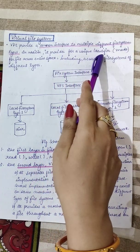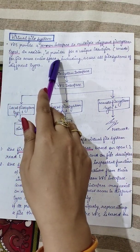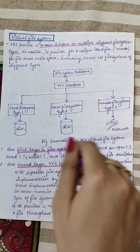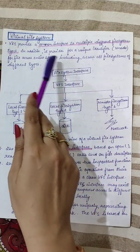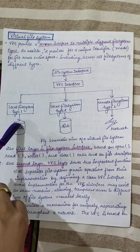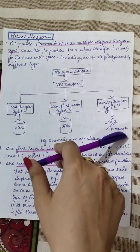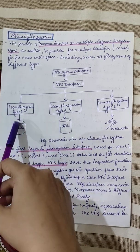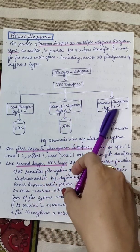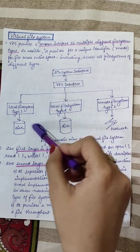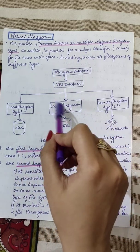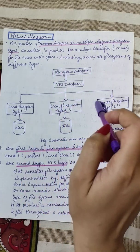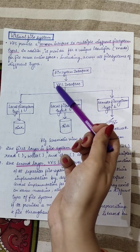In addition, VFS provides a unique identifier called a vnode for a file across the entire space, including across all file systems of different types. As the diagram shows, there is a file system interface layer. The user wants to access any file, whether it is present on a local disk or on a remote system through a network. There may be different types of file systems — local file system type 1, local file system type 2, and remote file system type 1. The user should be able to access files from any of these file system types, and that job is done by the virtual file system interface.